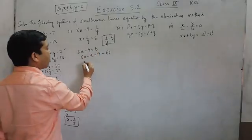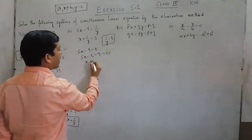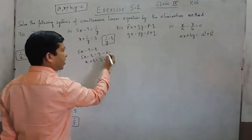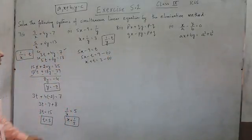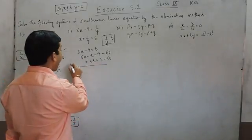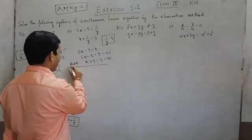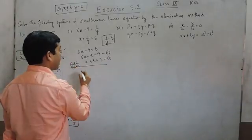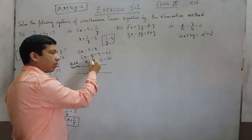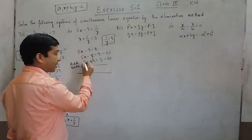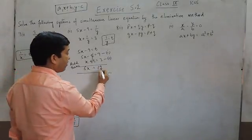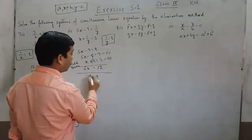The second equation is x plus t is equal to 3, because we have taken the value of 1 upon y as t. So either we multiply the first equation by a negative sign or we can directly add them. Adding these two equations, the t terms cancel out by themselves. So it is 6x; since we are adding and not subtracting — keep this in mind — so 5x plus x is equal to 12 and the value of x becomes 2.